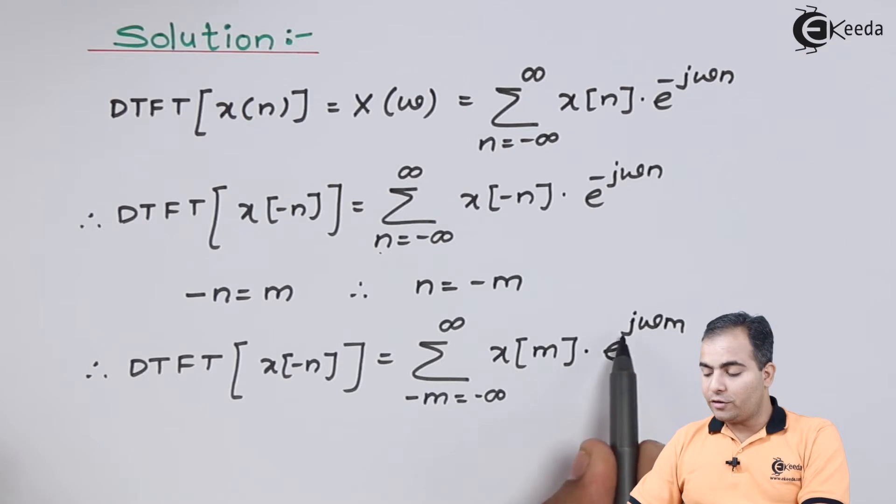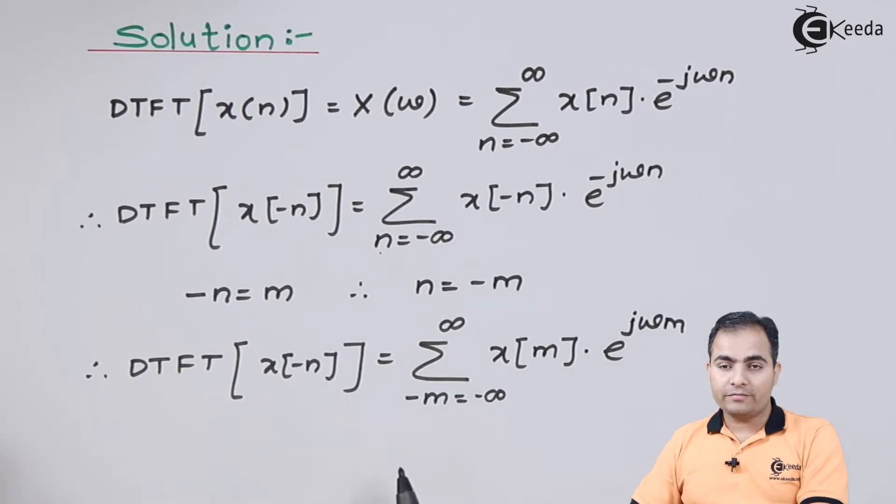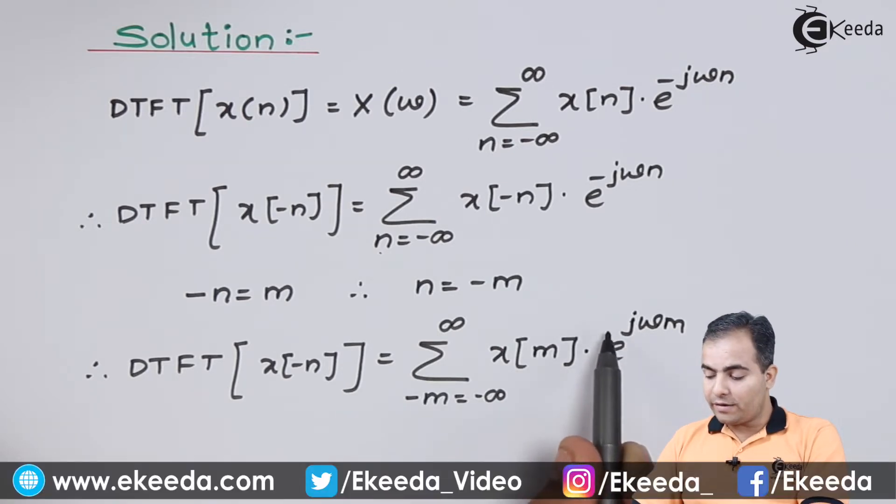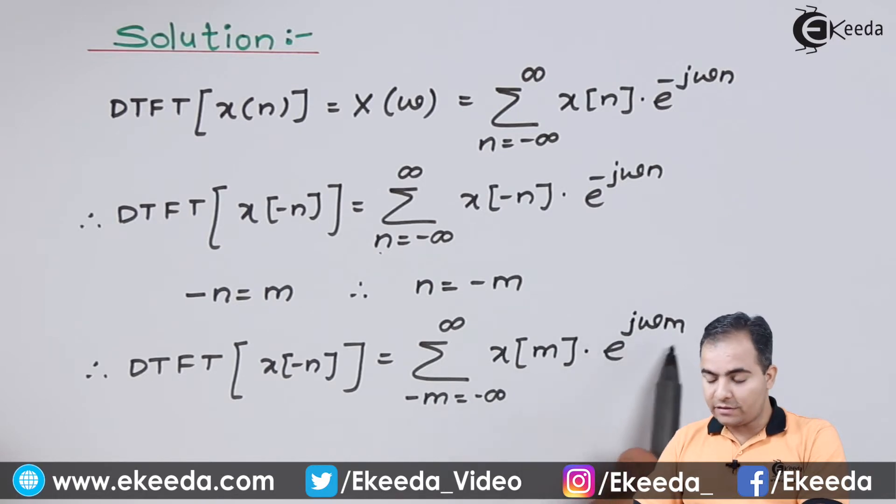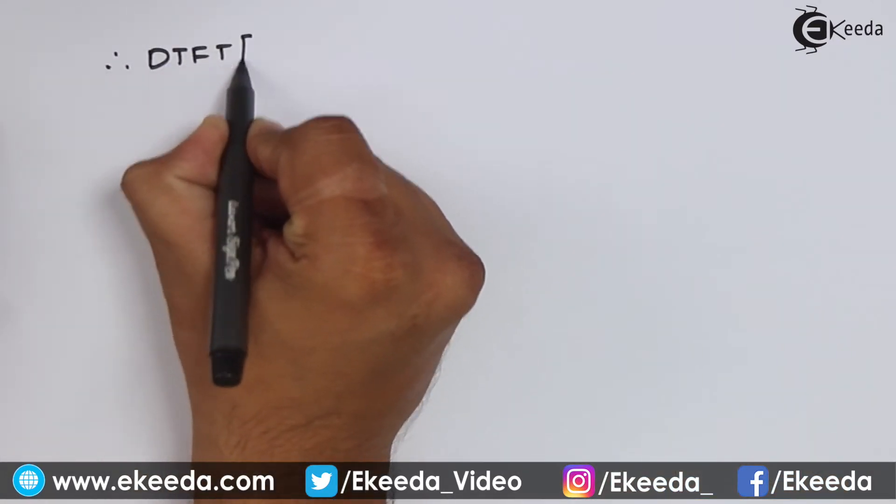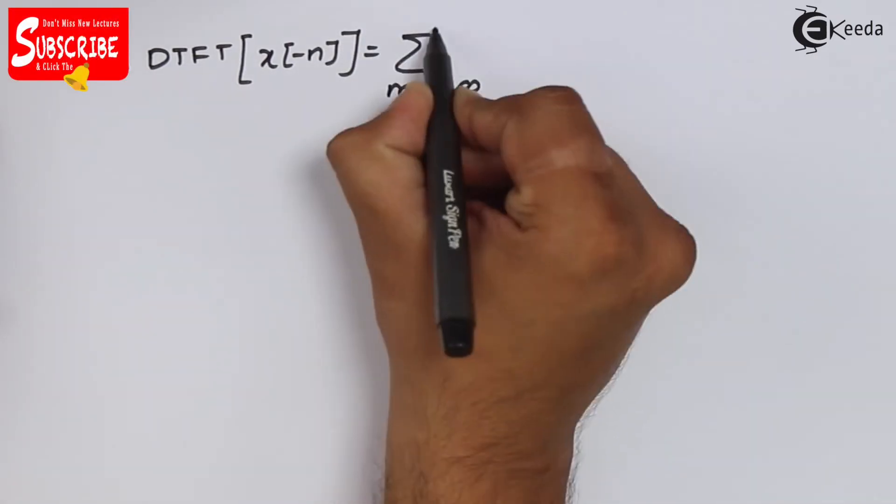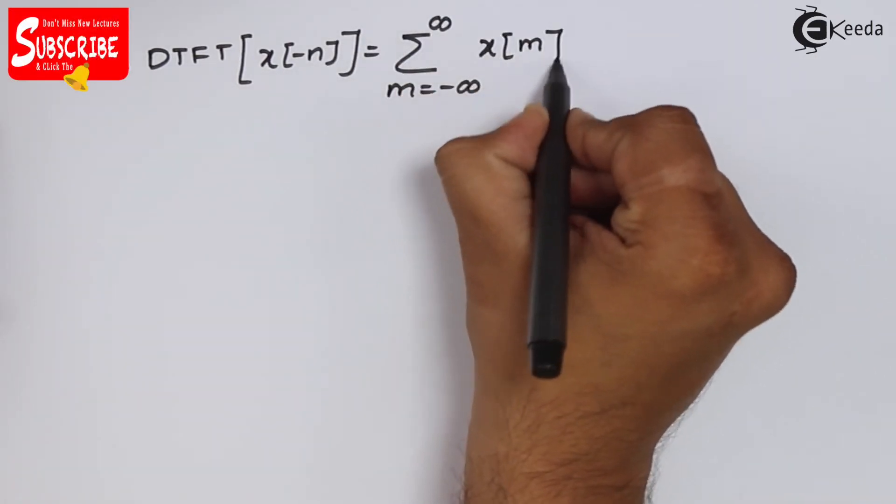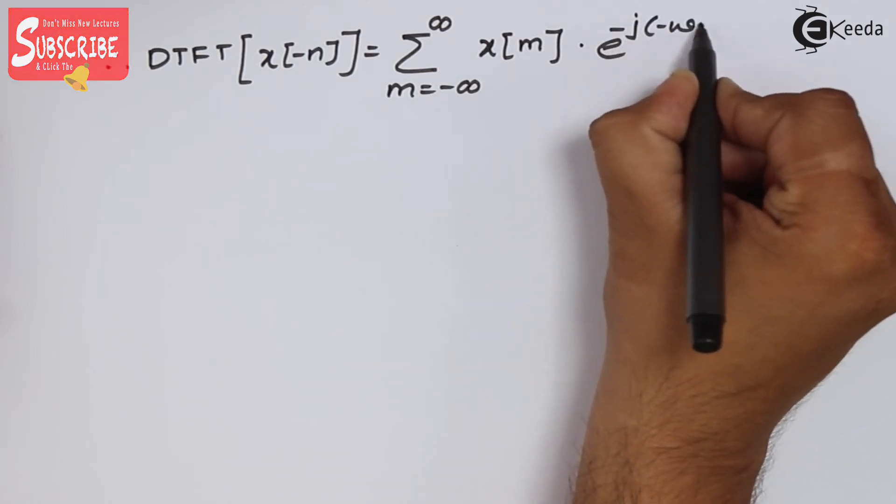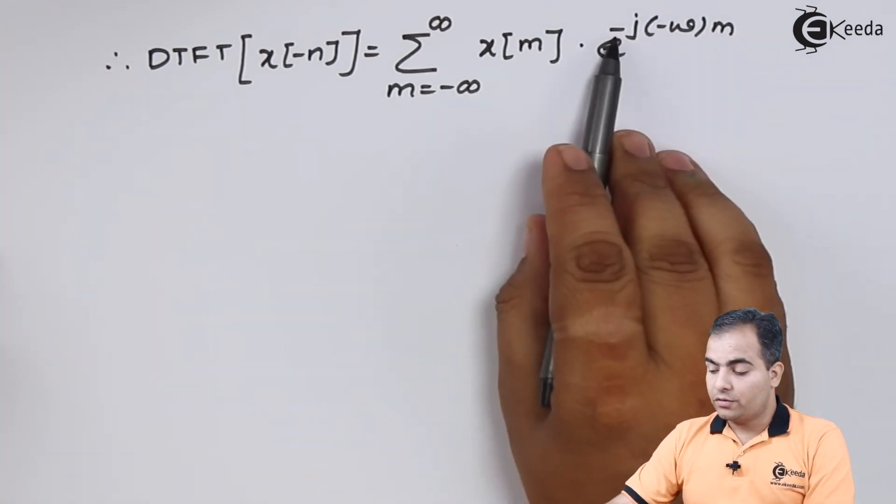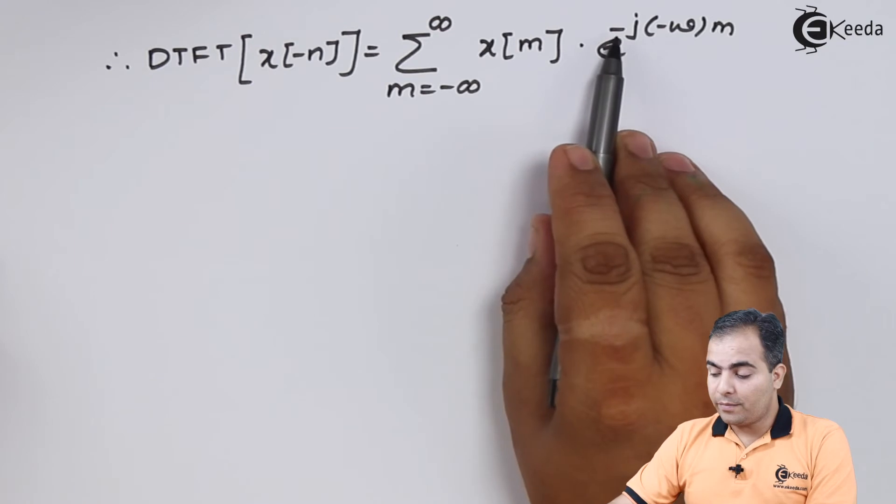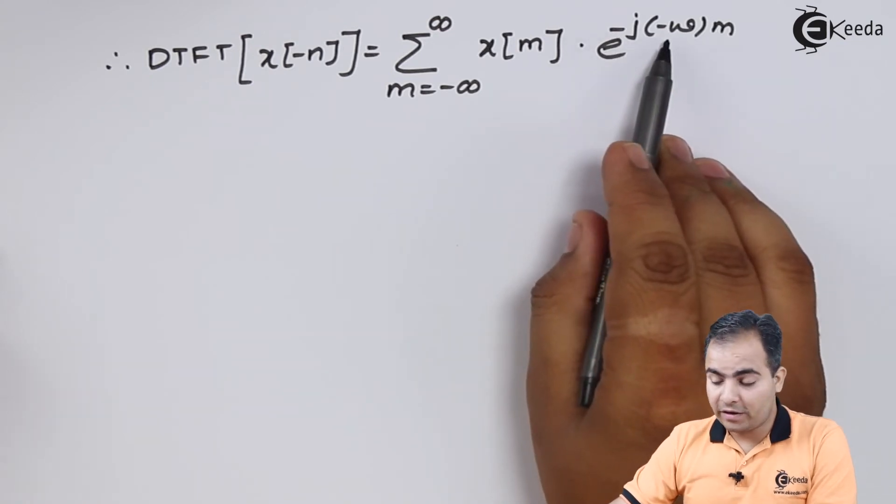Now look at it: e to the power minus j omega m we want, so what I'm going to do, I'll take a minus sign common in this part.